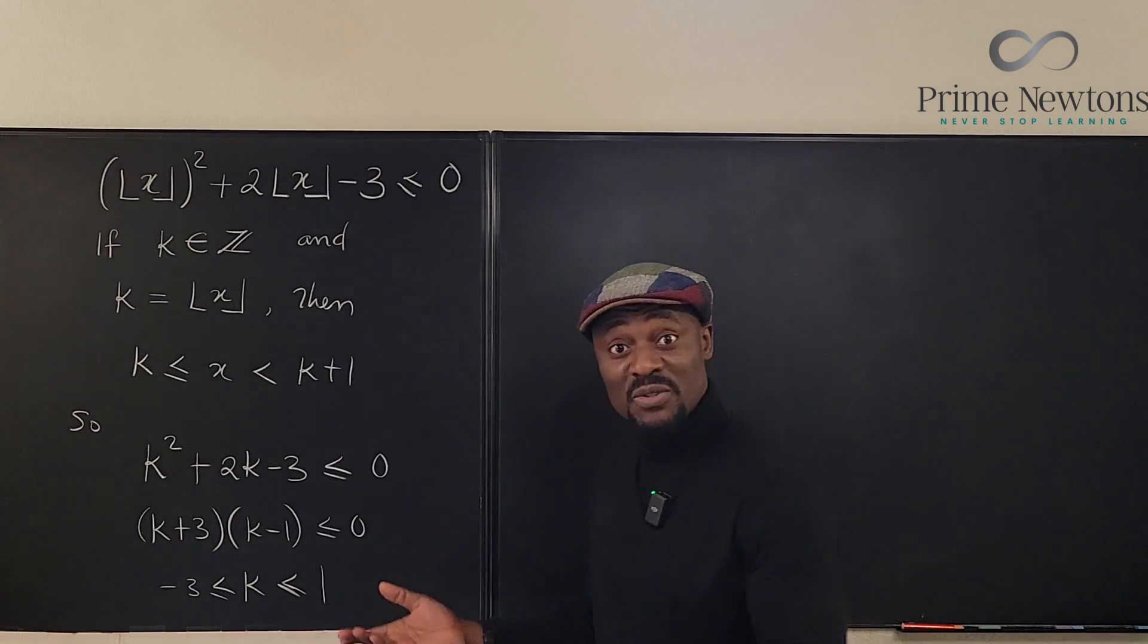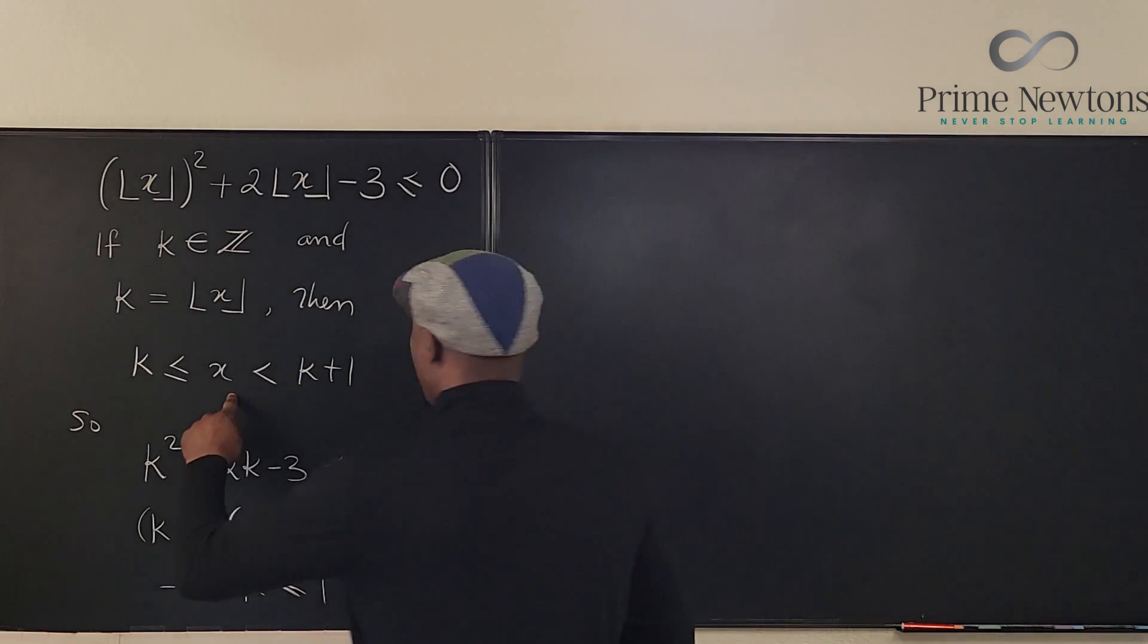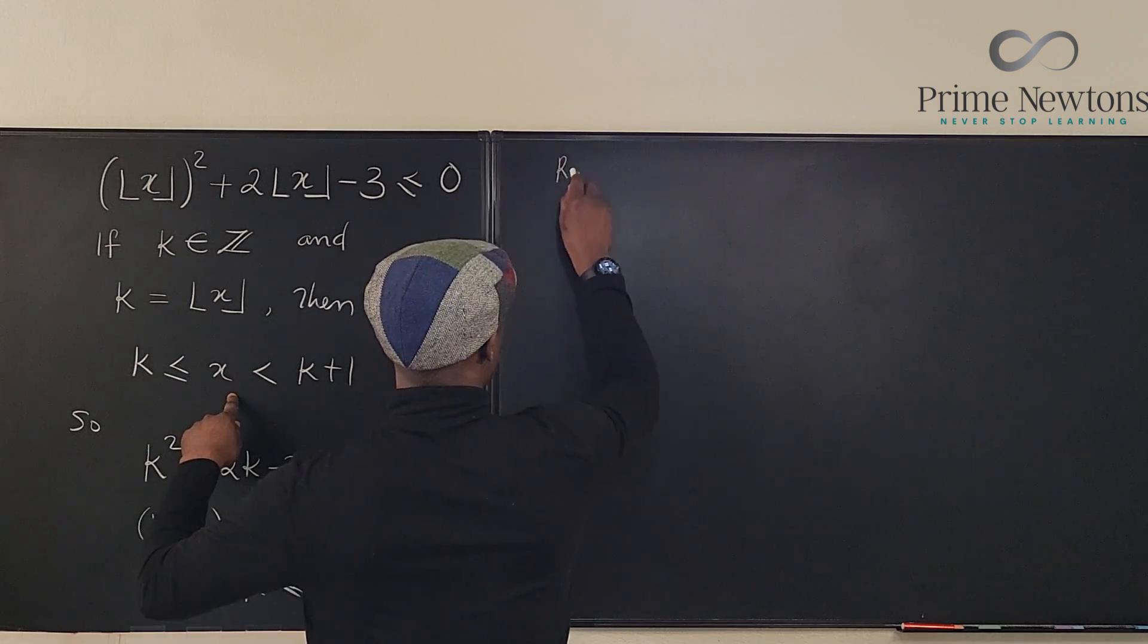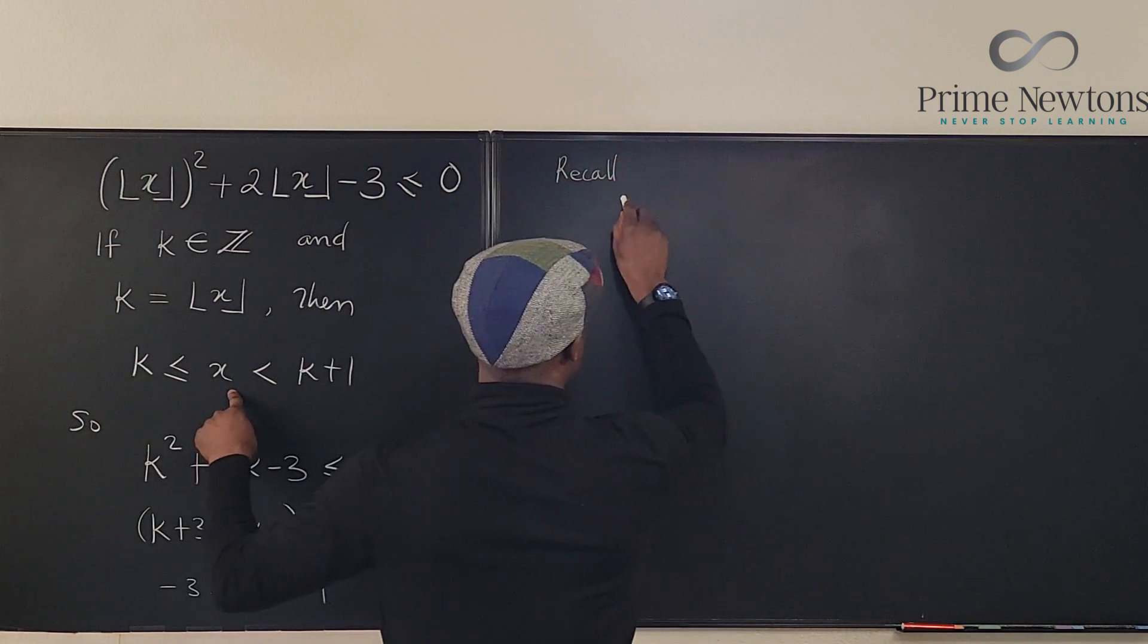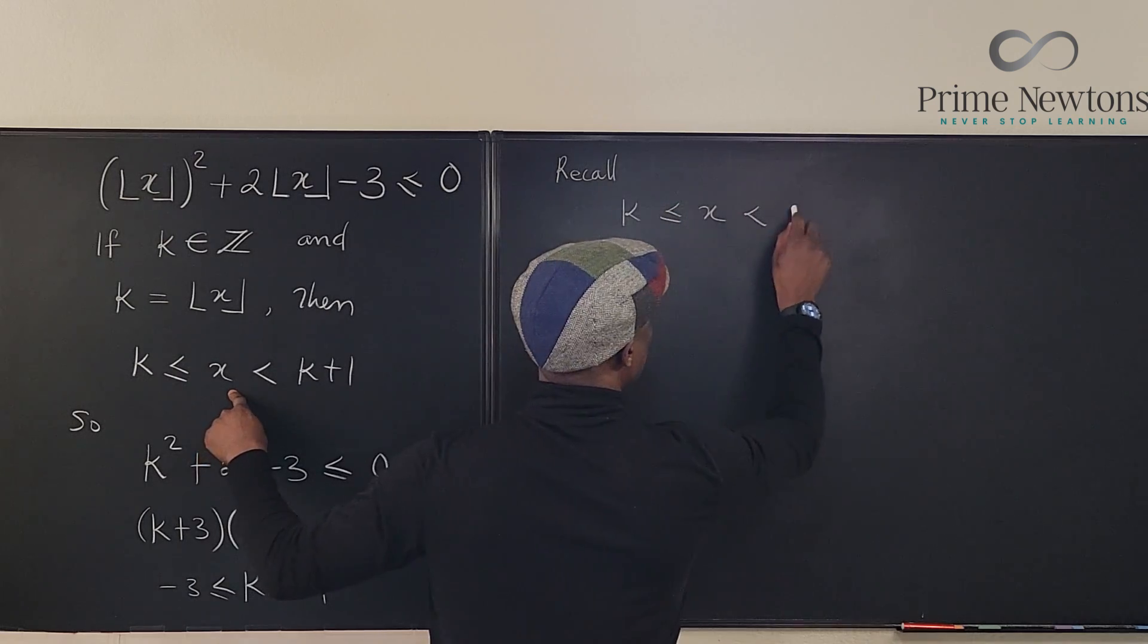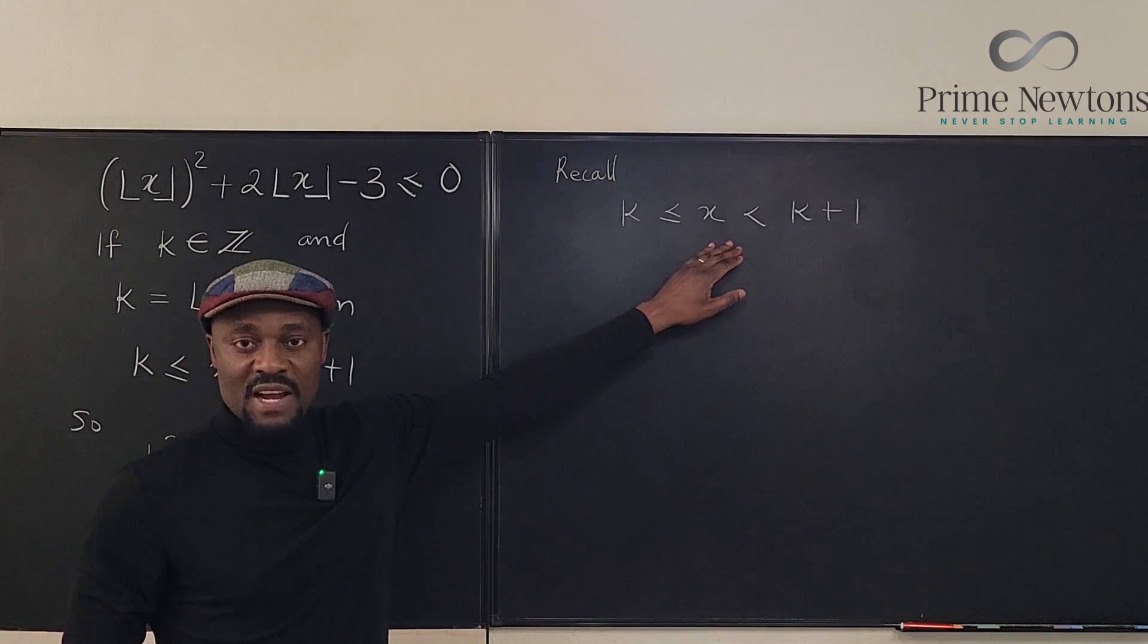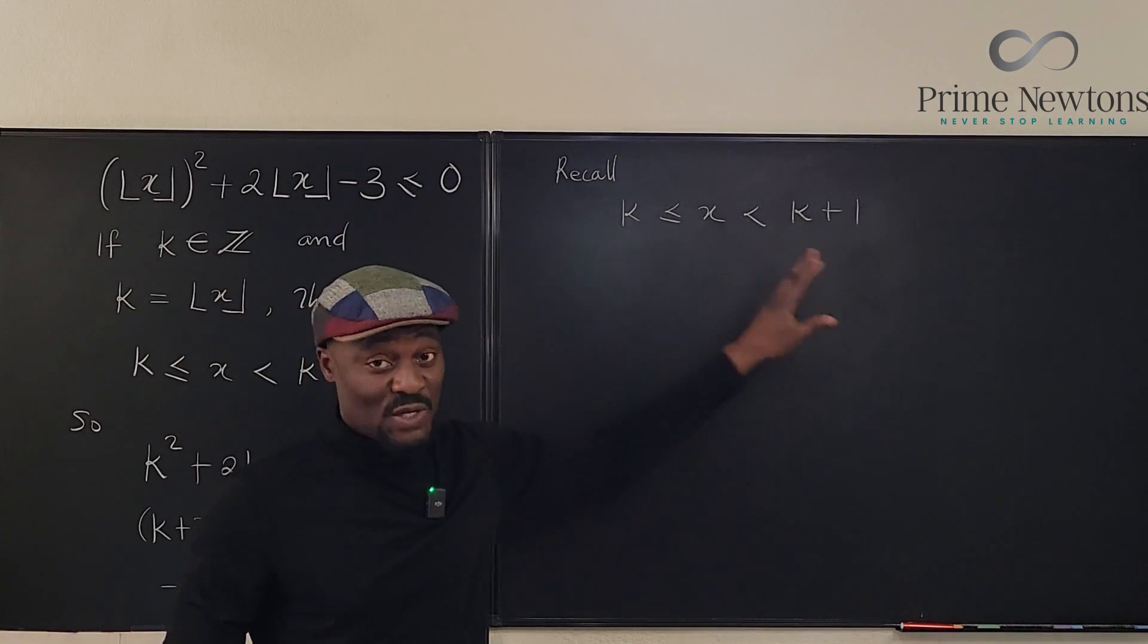And we're almost at our answer. Because remember, we have to go back to the definition. We have to recall from here that K is less than or equal to X, and X is strictly less than K plus 1. So that's how we define X. And remember, this is the answer we're looking for. We just don't know what K is.